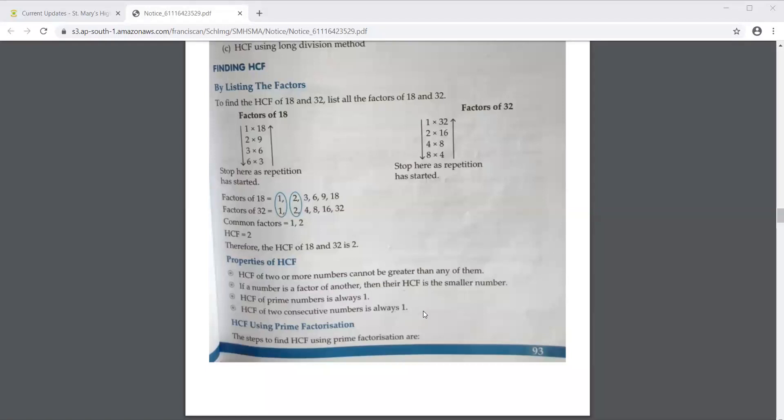Even if I tell you 520 and 521, if I tell you any two consecutive numbers, immediately you can tell me what the HCF is. And even if it is a prime number, automatically you know that the HCF is 1.